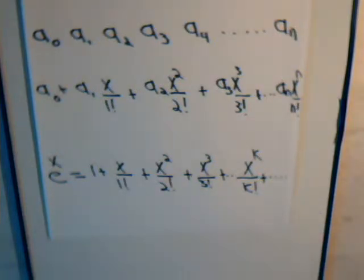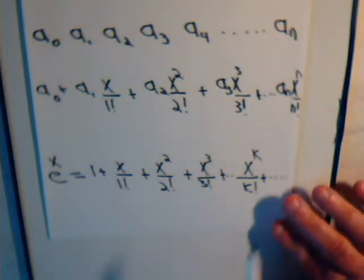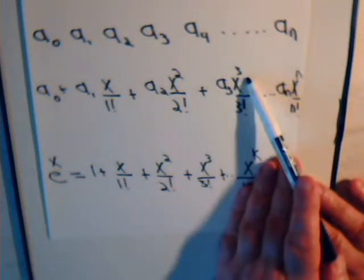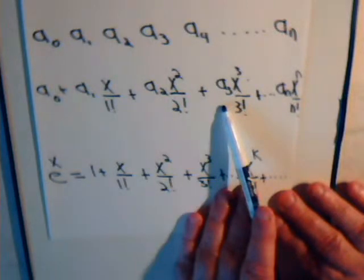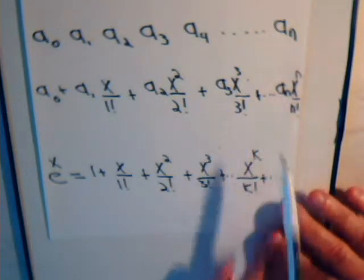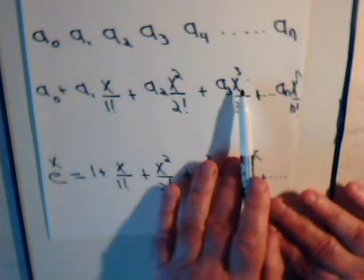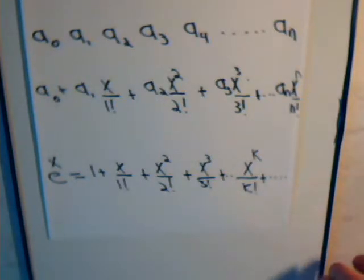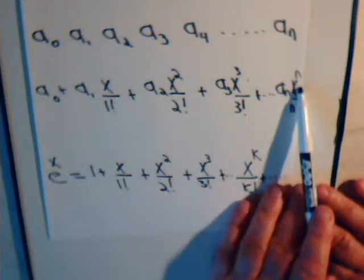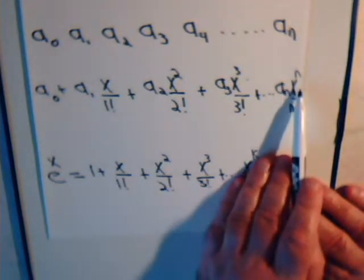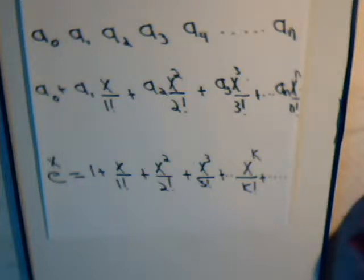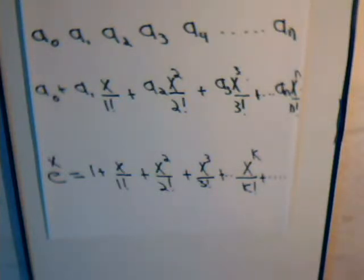In this new form, the terms take on a whole different significance. For example, the coefficient of x cubed divided by 3 factorial is the number of ways we can select three different objects when the order matters — that is, the number of permutations of three objects. Likewise, the coefficient of x to the n divided by n factorial tells us the number of ways we can permute n different objects.